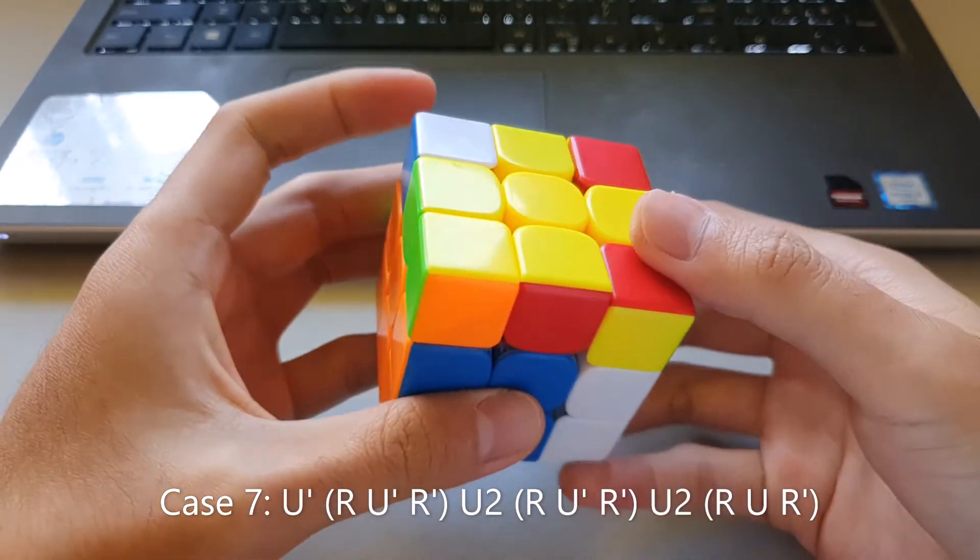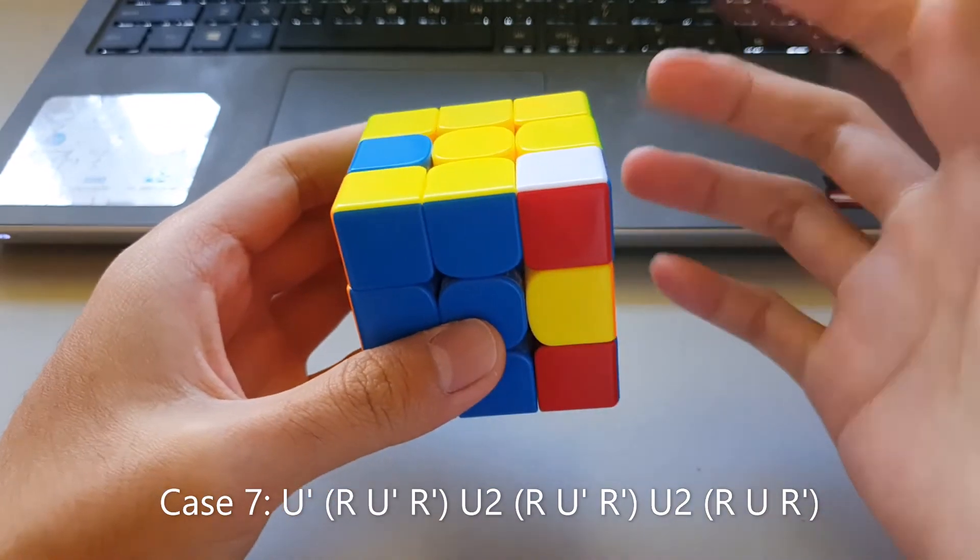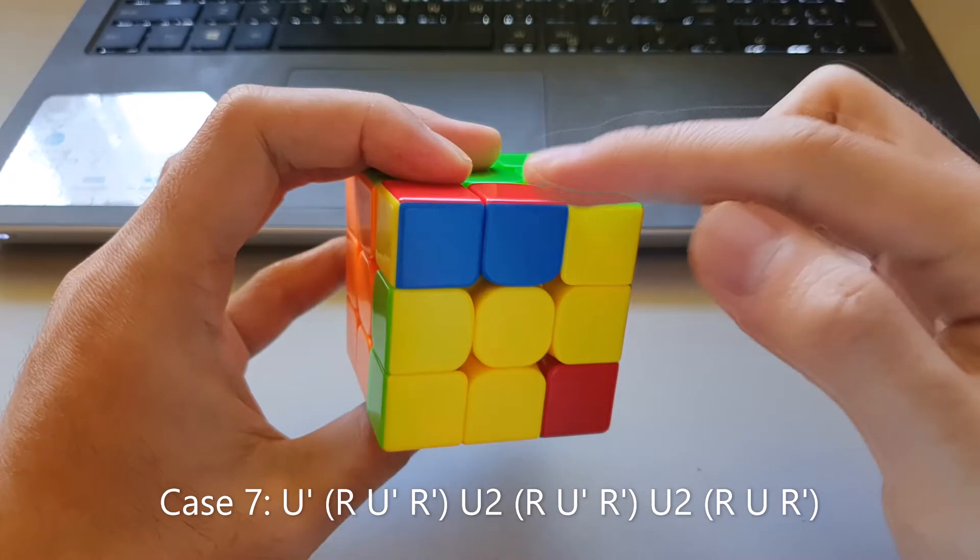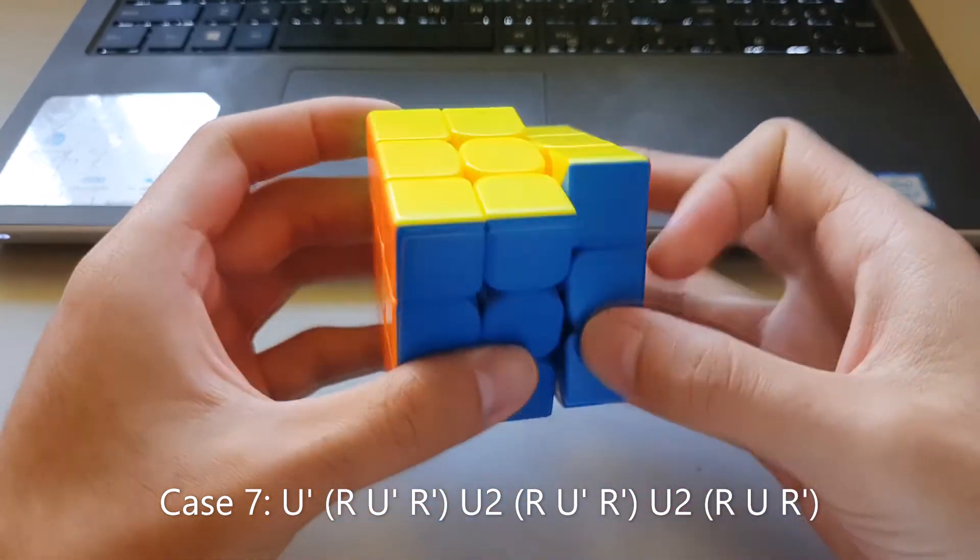So R U', R', U2, and then you repeat that again. So R U', R', U2, and this sets up this F2L pair for the regular R U R' insert.